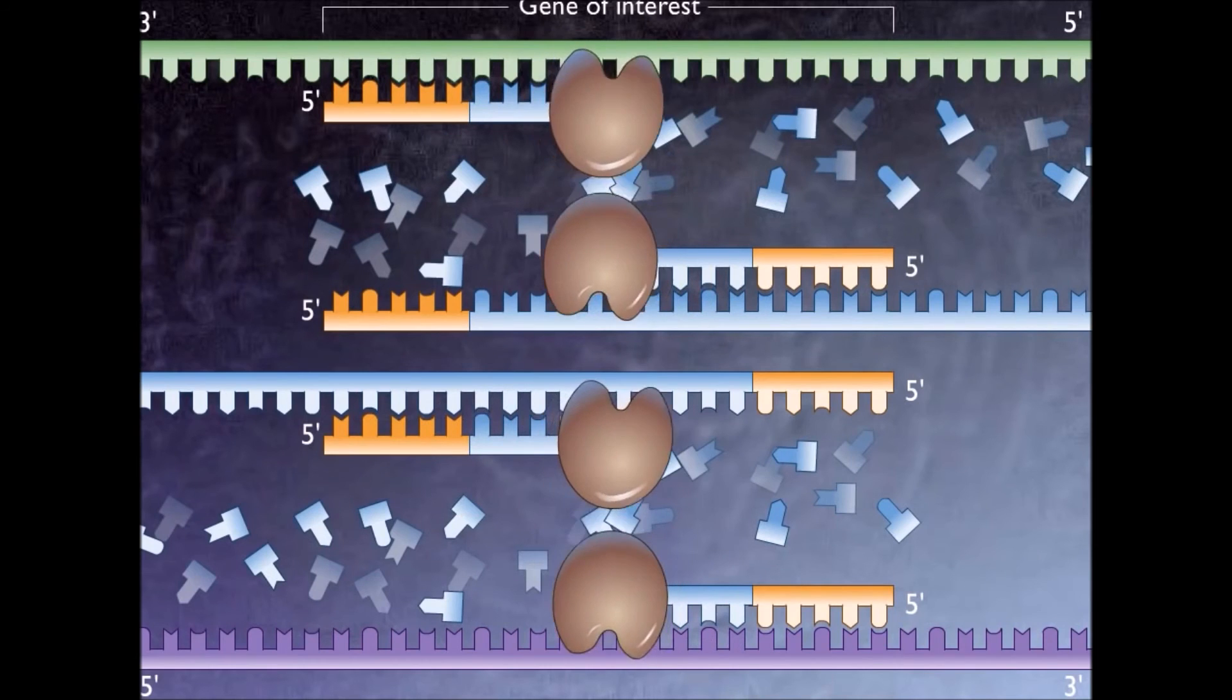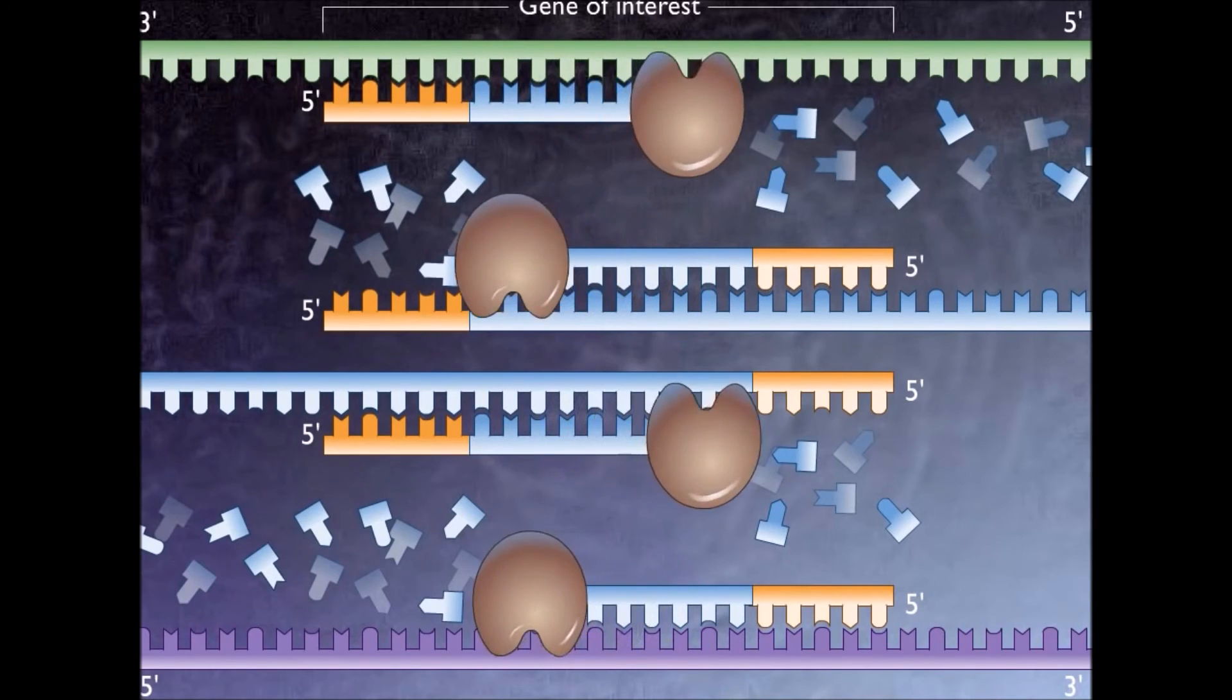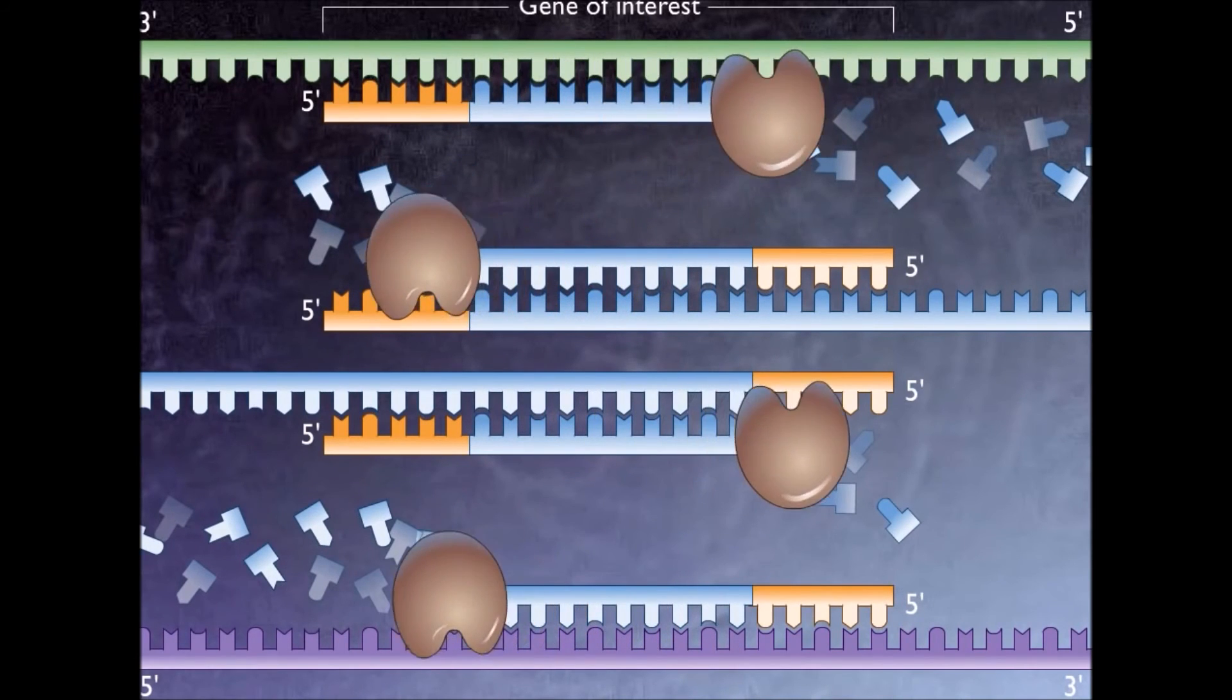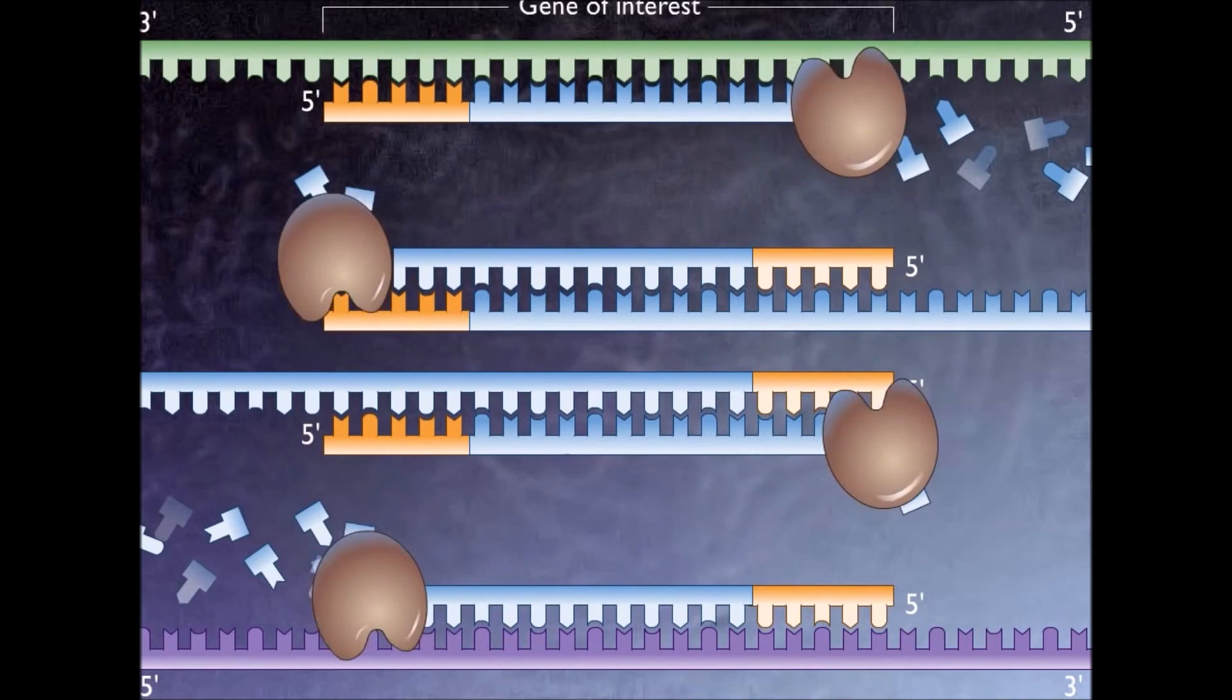Primers that are on positions with no exact match get loose again because of the higher temperature and don't give an extension of the fragment.